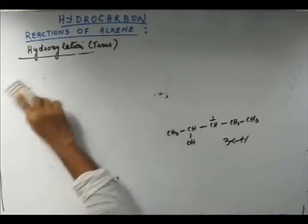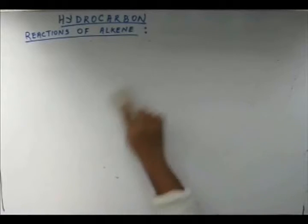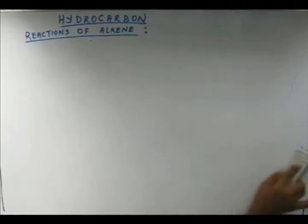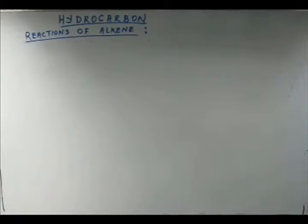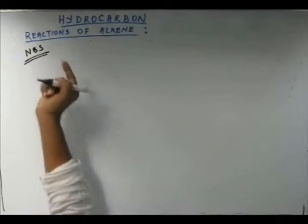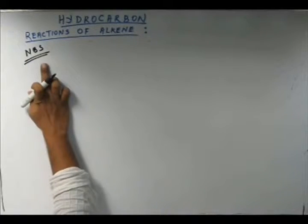Then we move to the last reaction of alkene. This reaction is substitution using NBS. This is an important reaction and this is an important reagent NBS. NBS is N-bromosuccinimide.